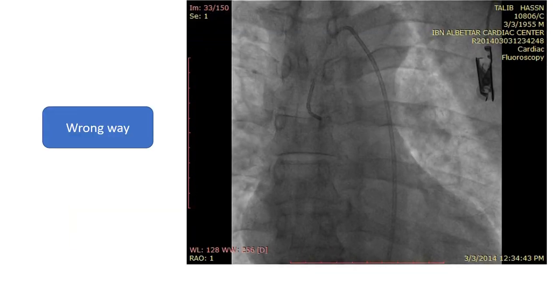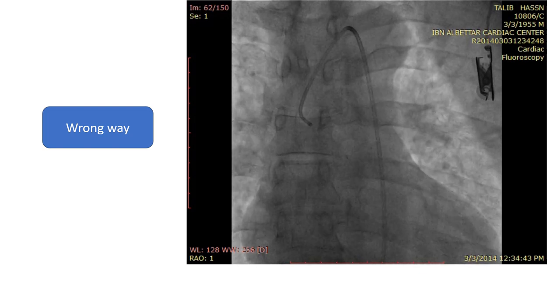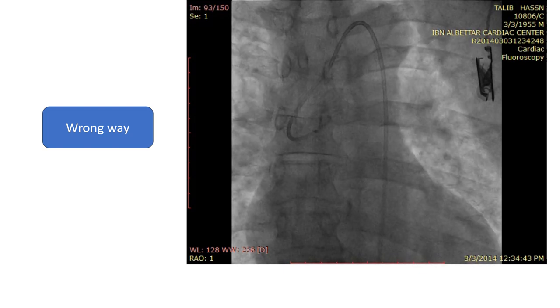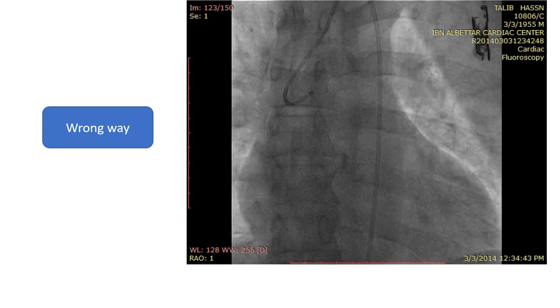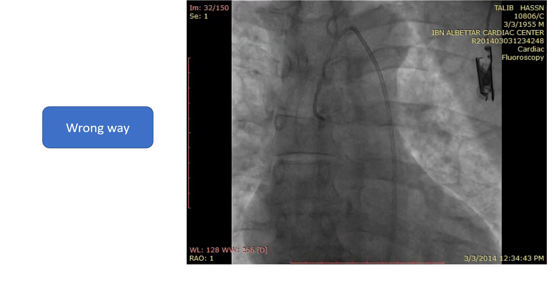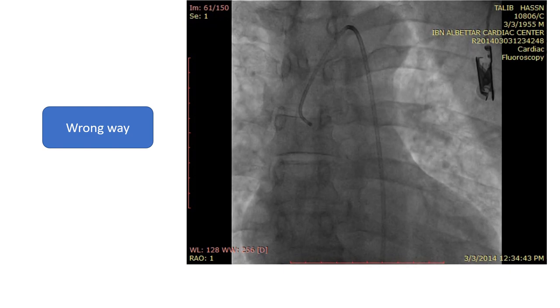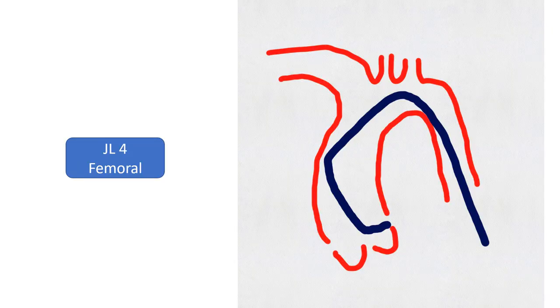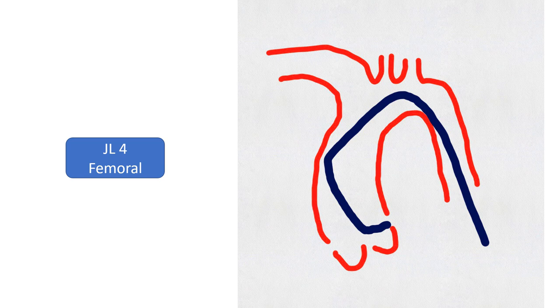When the catheter is manipulated and rotated while still in the ascending aorta, its direction is going to change and engagement will be difficult, as shown in this case. In most cases, a Judkins left 4, JL4, is optimal to engage the left coronary artery from femoral approach.